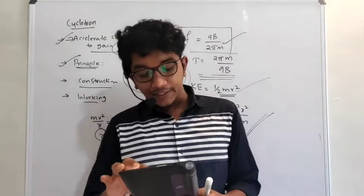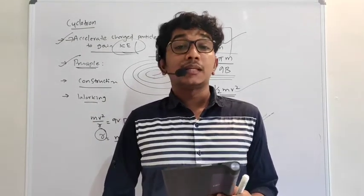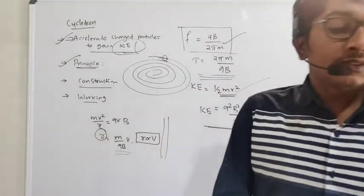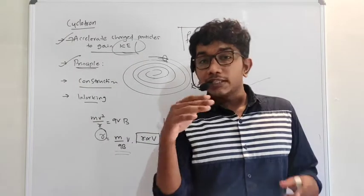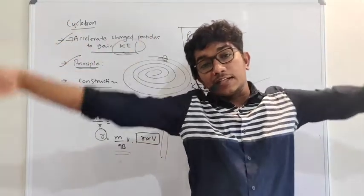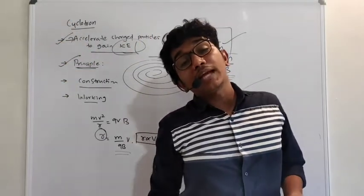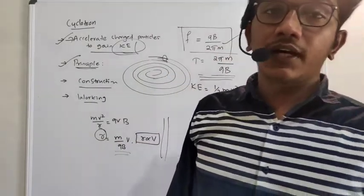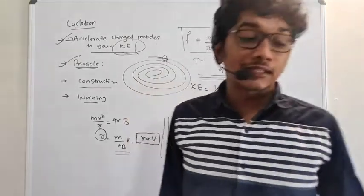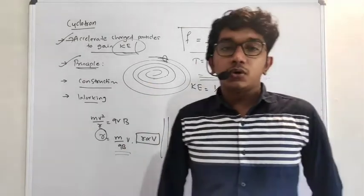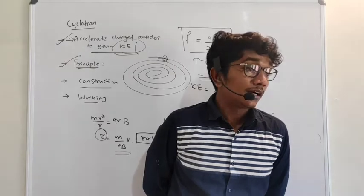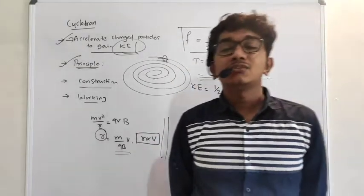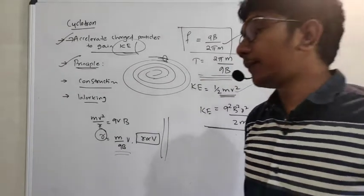From a state board perspective, we also have to write the limitations of the cyclotron. First, the speed of the ion is limited here. Because if the radius increases, we cannot practically have a large oscillator plate — and even if we could, it would be impossible to produce a magnet that large. That is one limitation. Second, electrons cannot be accelerated — negative charges cannot be effectively accelerated in a cyclotron. Even if we tried, the mass of the electron is very very small, which is why we cannot accelerate electrons. These are the major disadvantages.